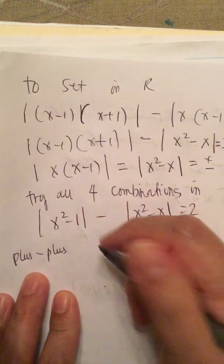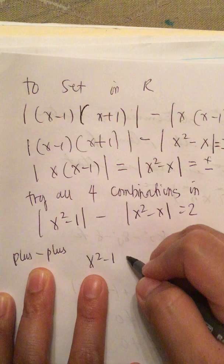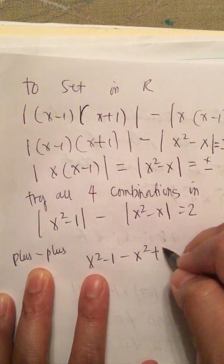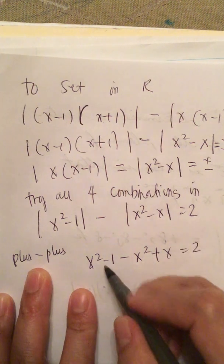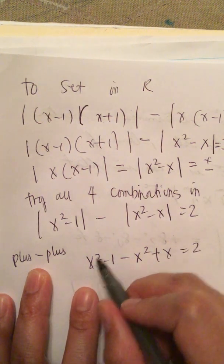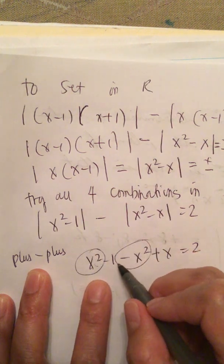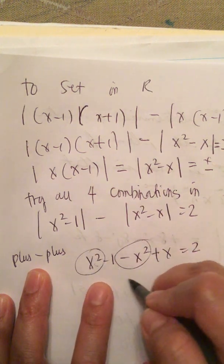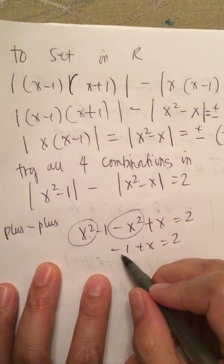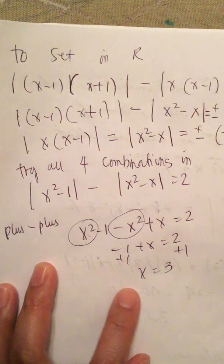For the first combination, we get x squared minus 1 minus x squared minus x equals 2. So we get x squared minus 1 minus x squared plus x equals 2. The x squared terms cancel, giving minus 1 plus x equals 2. Then we add 1, so x is equal to 3.